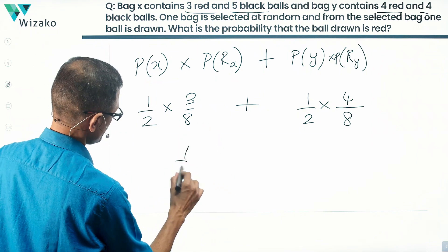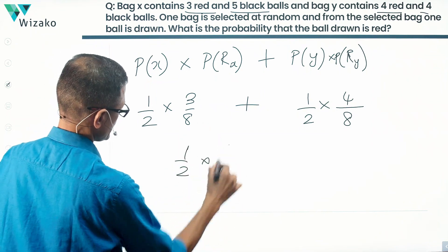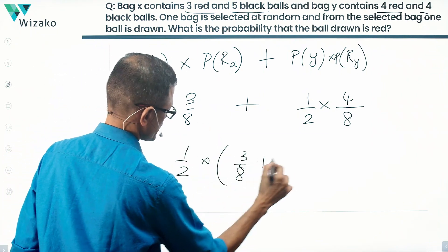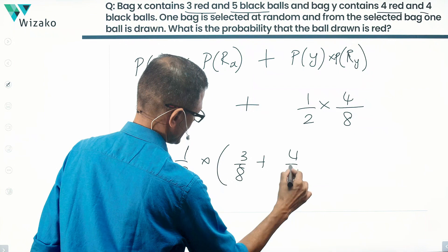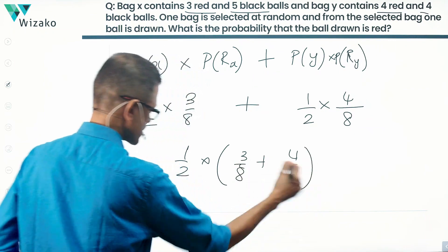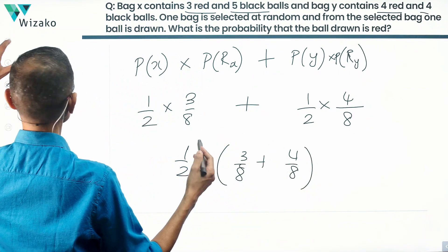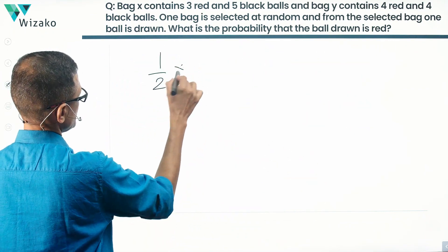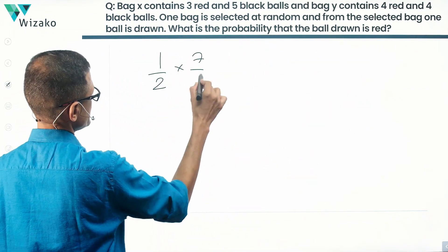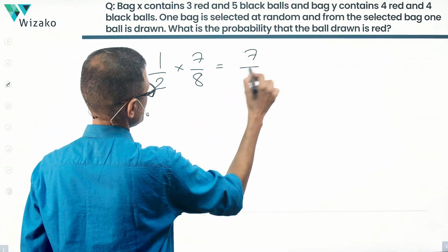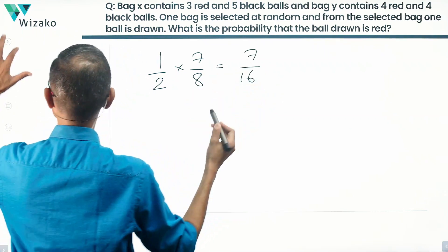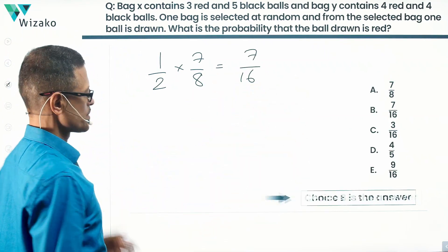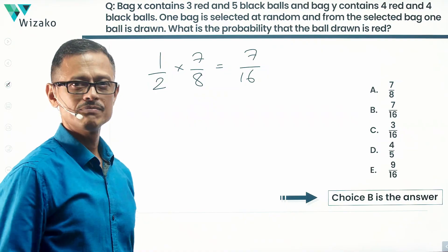So the total is half times (3/8 + 4/8), which equals half times 7/8, giving us 7 upon 16. Answer choice B is the correct answer to this question.